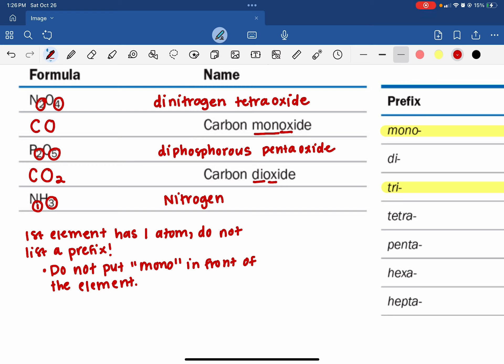For the second one, we're going to go ahead and list our prefix tri. Hydrogen, we are going to use the first half of that name, which is hydro. And then ide, hydride. So nitrogen trihydride.